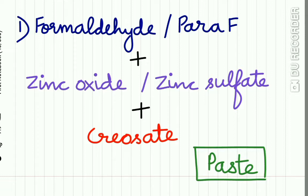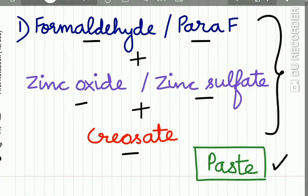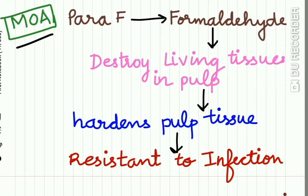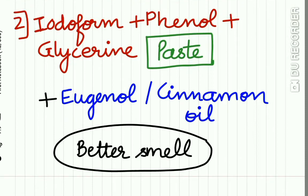The first commonly used mummifying agent was a formulation of formaldehyde or paraformaldehyde with zinc oxide or zinc sulphate, plus creosote — all three combined together to form a paste filled in the root canals. The mechanism of action: paraformaldehyde releases formaldehyde, which destroys the living tissue in the pulp and hardens it, making it resistant to infection.